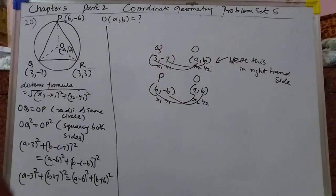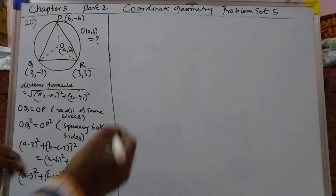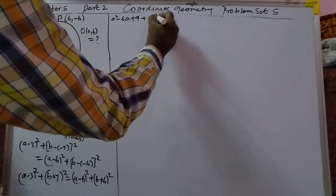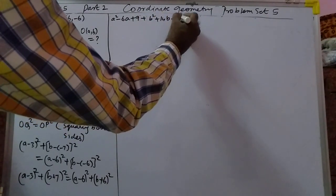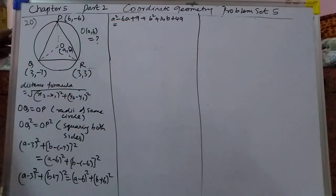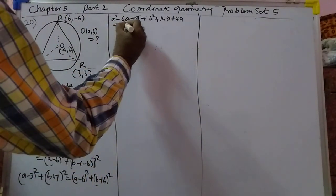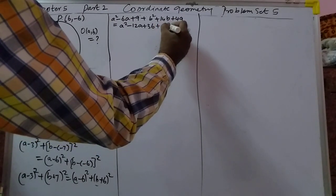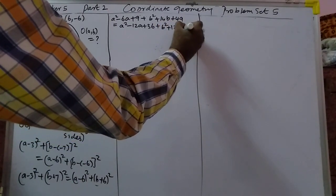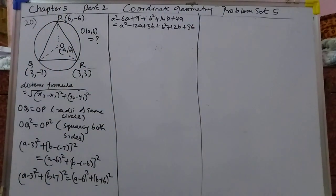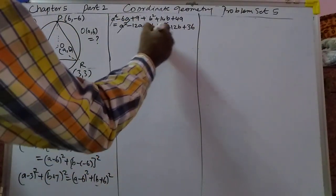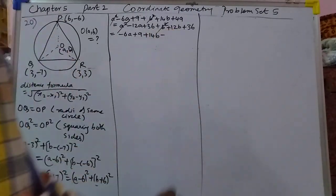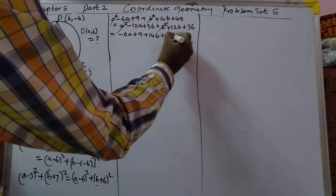Okay, that will be solved on that side. We will expand it. It will become A² minus 6A plus 9 plus B² plus 14B plus 49, that is equal to A² minus 12A plus 36 plus B² plus 12B plus 36.